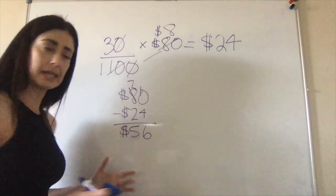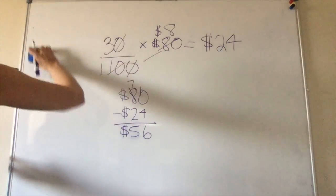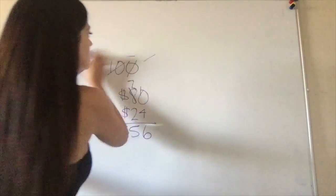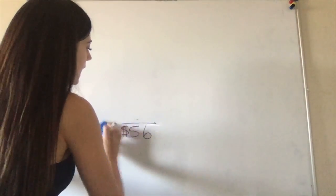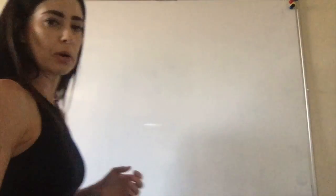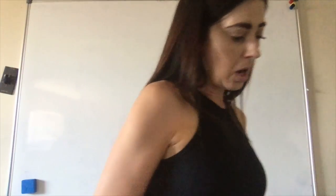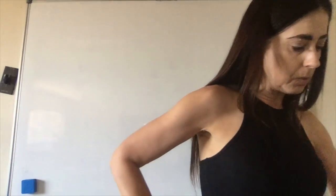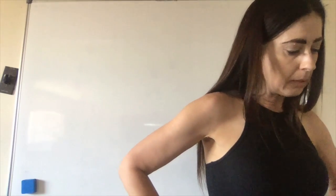All right, this next one's a little bit more difficult, and this is when we have a sale price and we have to figure out the original price. Okay, so the problem says the sale price of the ring was one hundred and twenty dollars. It had been marked down forty percent.